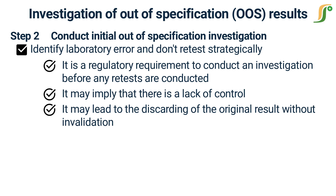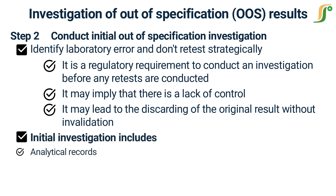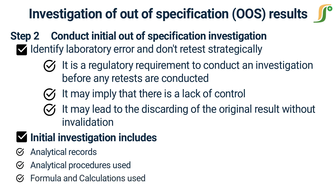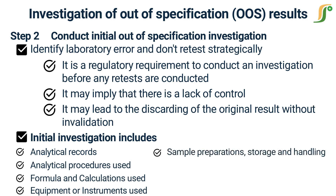This should be done by a combination of standard operating procedures supported by an OOS investigation form. This approach minimizes errors and subjective decisions and ensures the investigation is thorough and fully documented. The initial investigation includes but is not limited to examination of analytical records, raw data, laboratory notebooks, analytical procedures used, formula and calculations used, equipment or instruments used, sample preparations, storage and handling, testing environment, and analyst error.